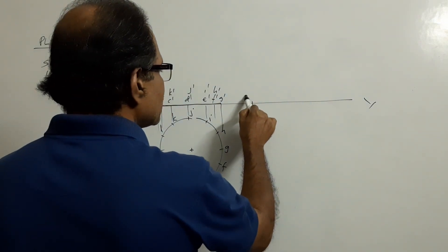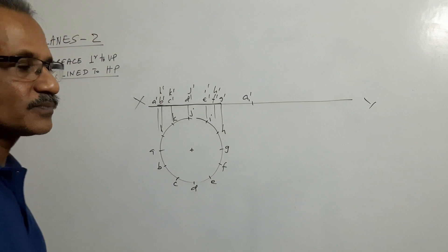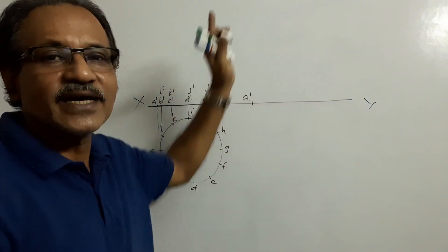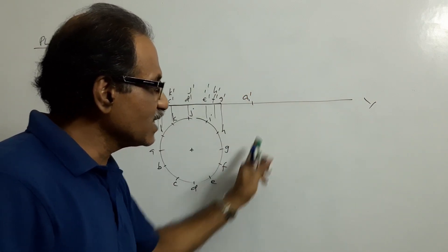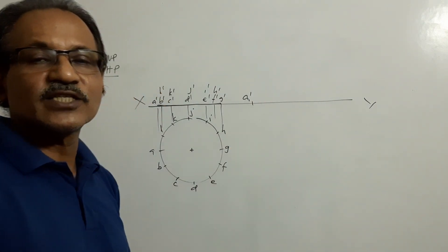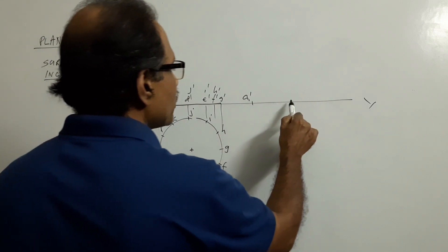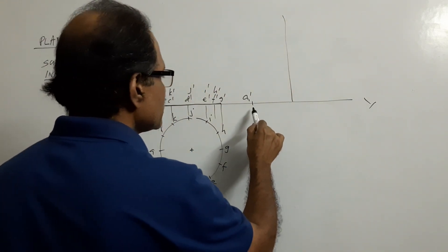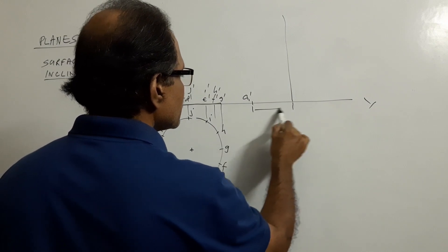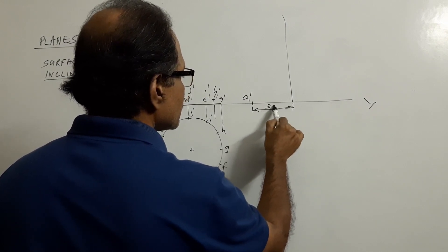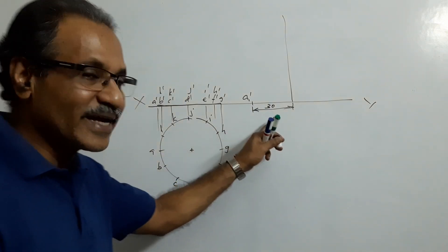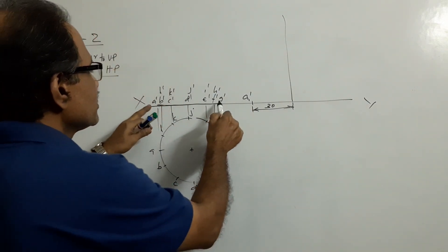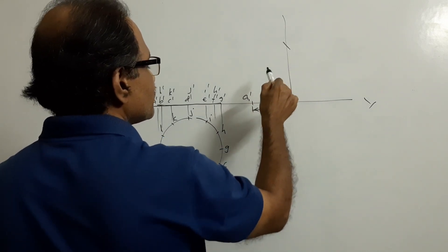Now choose A dash anywhere on XY. You are going to lift it — how far? You don't know the angle. But you know that after lifting, you get an ellipse with minor axis 30. What you do: take 30 mm and draw a projector — this distance is 30. You are ensuring the minor axis becomes 30. Take this distance in your compass and cut an arc and connect.